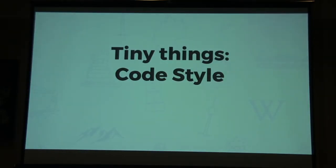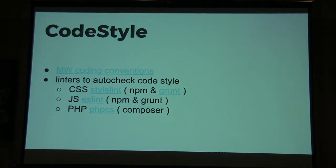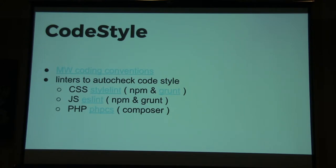We start with some really tiny things: code style. MediaWiki has coding conventions — rules for how we want our code written so it's easily readable and uses a common style across all MediaWiki projects. We also have linters that auto-check these rules. For CSS we have stylelint, installed with npm and run with Grunt. For JavaScript we have ESLint, also run with Grunt and installed by npm. And we have the PHP CodeSniffer, installed and run with Composer to check code style in PHP.